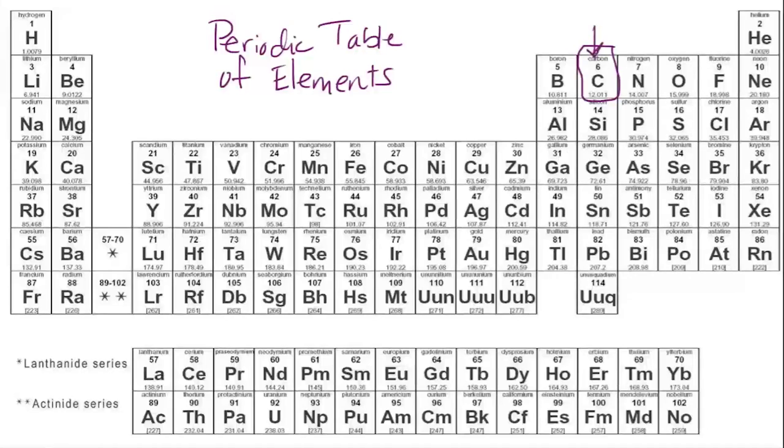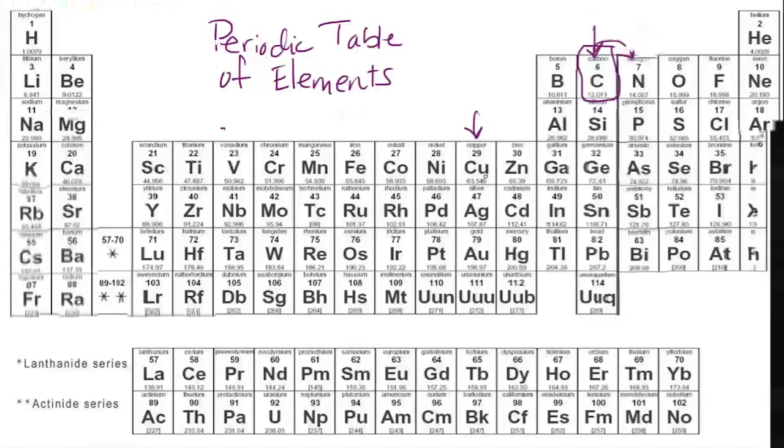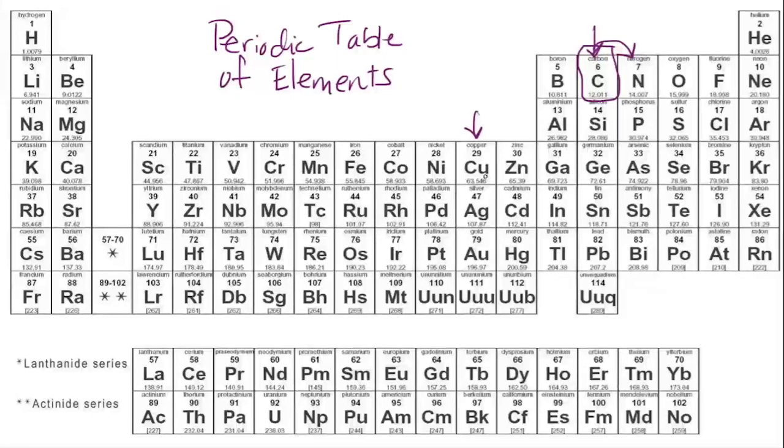An atom of carbon is going to be very different than an atom of nitrogen or copper or any other of these elements, but they're all made up of atoms. Everything in the world today, all the matter that exists, is made up of some kind of combination of these elements. Some of them are very simple.